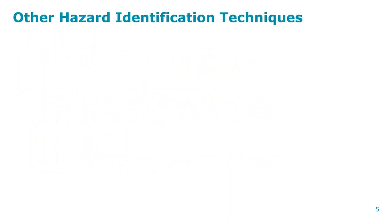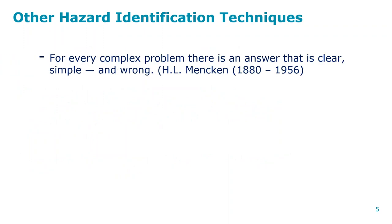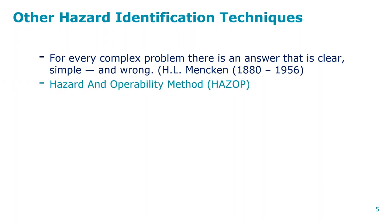There are other hazard identification techniques. There's a famous saying: 'For every complex problem there is an answer that is clear, simple, and wrong' — H.L. Mencken, 1880–1956. Always keep your mind open to possibilities; the most obvious solution is sometimes not the right one. Other methods used by chemical engineers include what-if checklists, FMEA, fault tree analysis, and event trees.